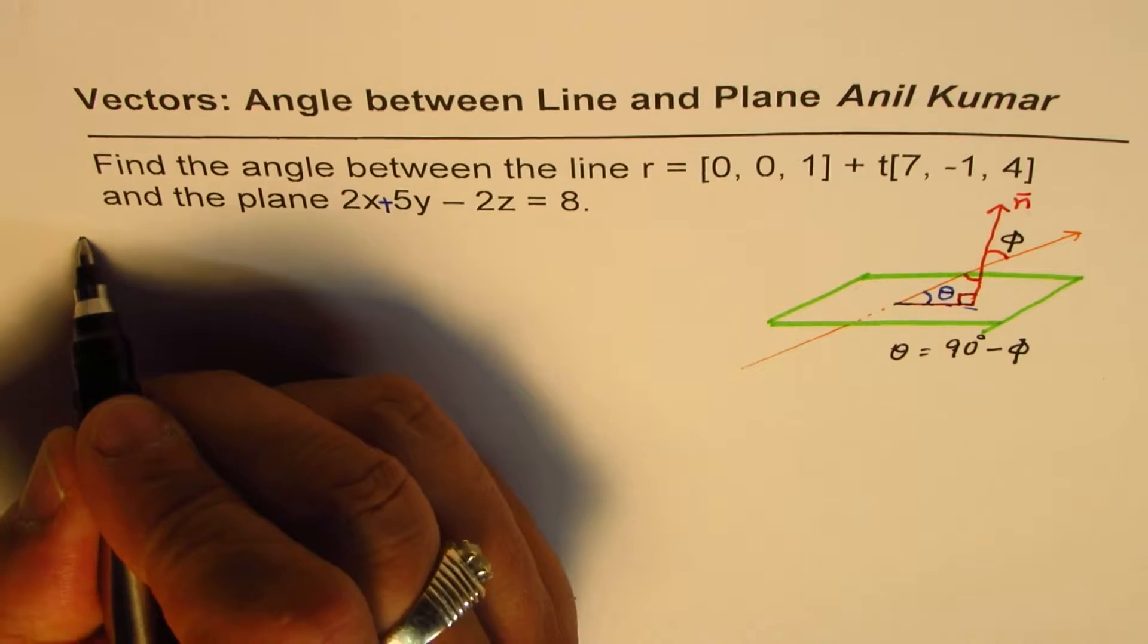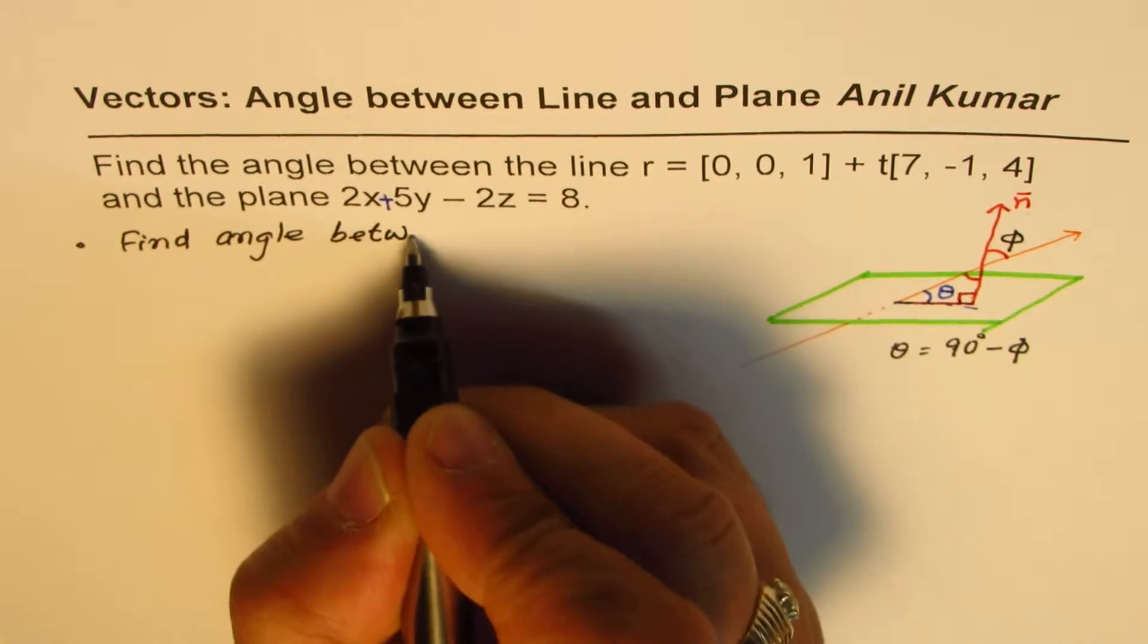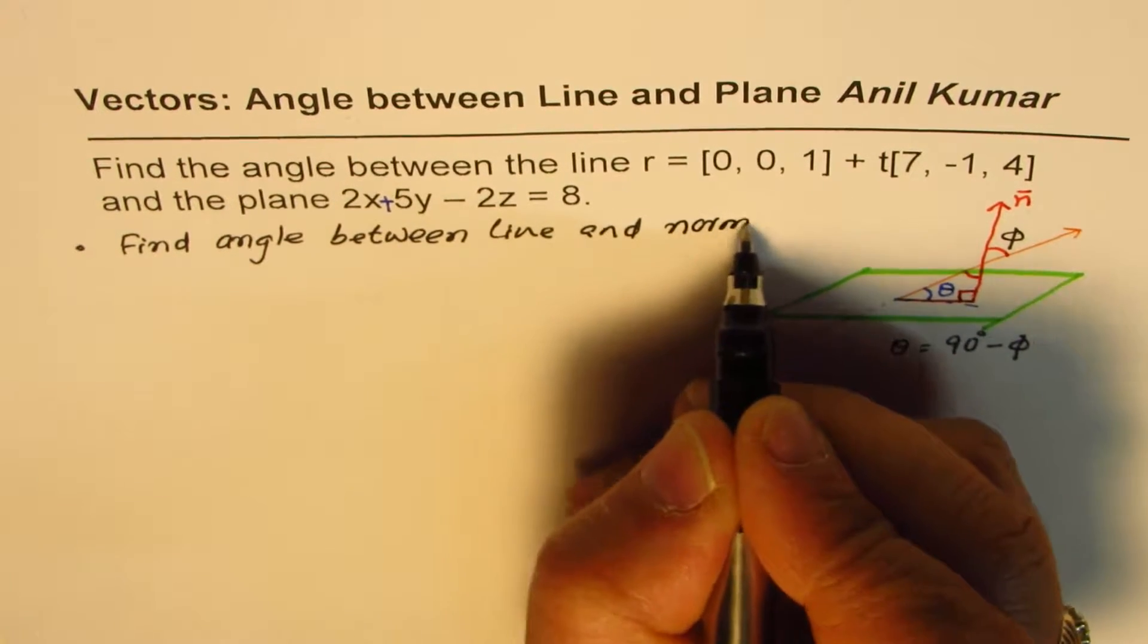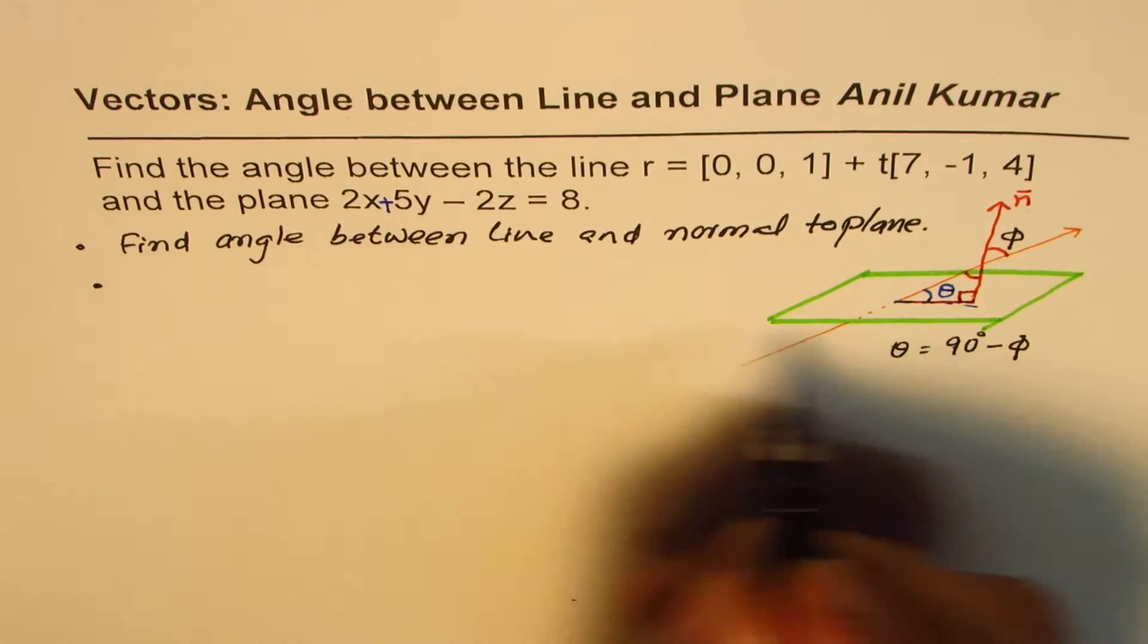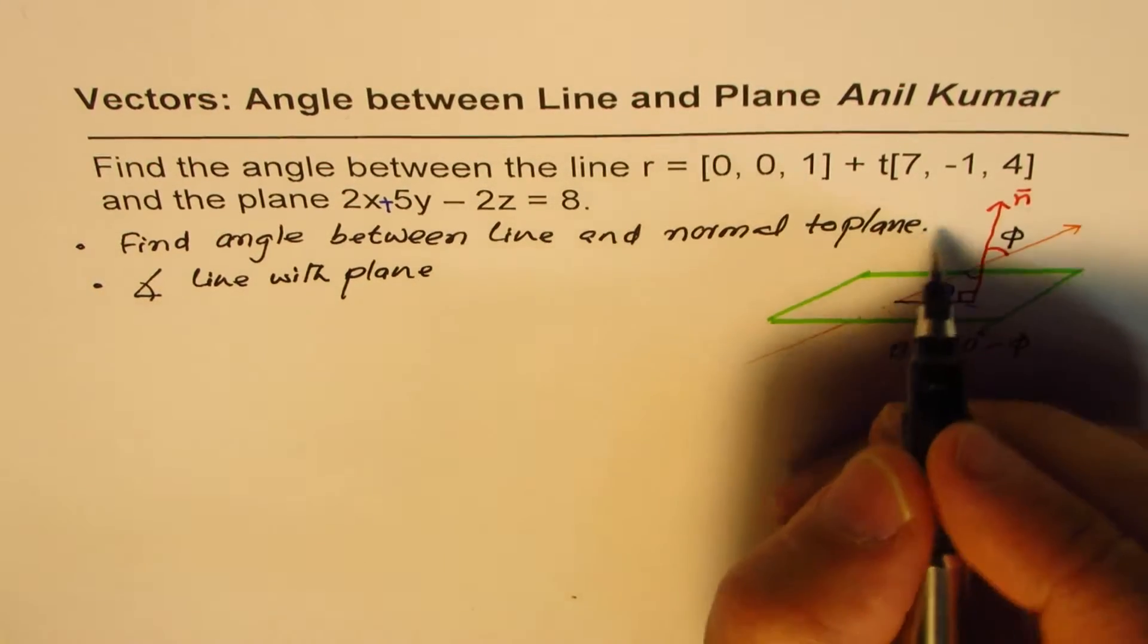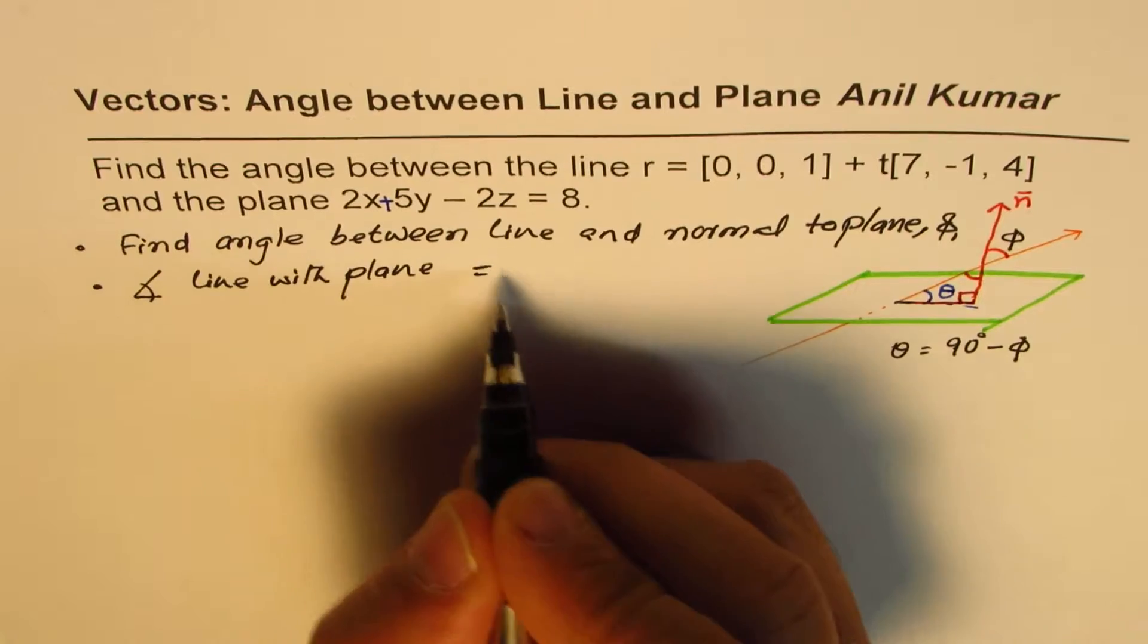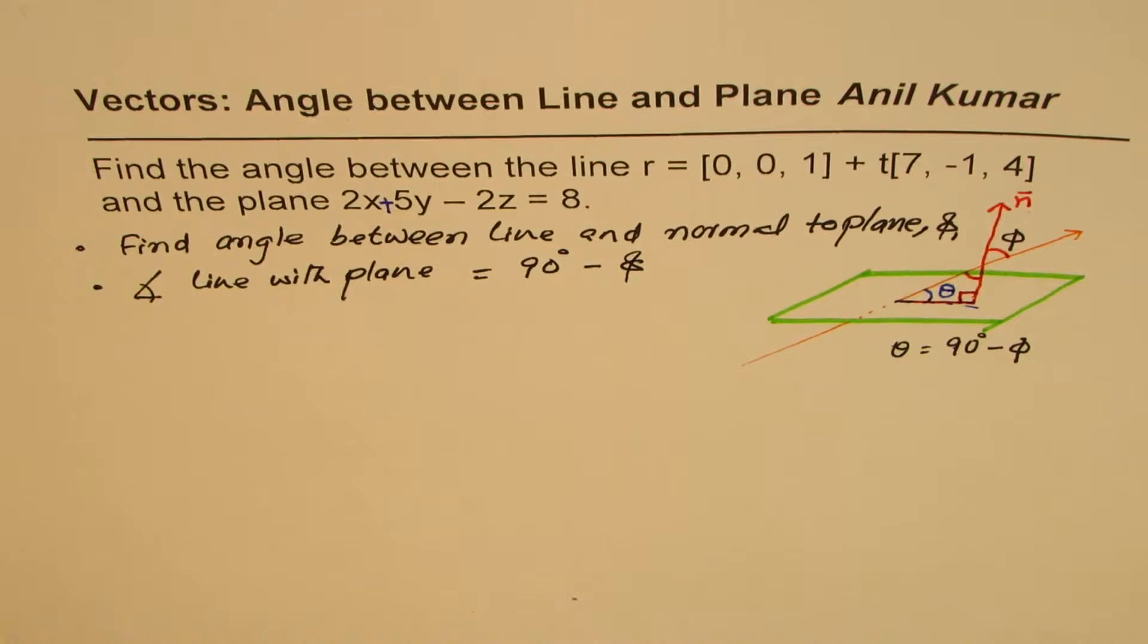So that is the concept which we are going to use to solve this question. The idea is: step one, find the angle between line and normal to plane. And then we know that the angle between line and plane, let this angle be phi, then the angle between the line and the plane equals 90 degrees minus phi. So that is the concept. With this concept, you can pause the video, answer the question, and then look into my solution.